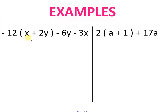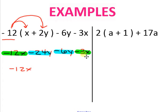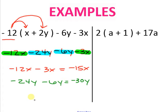Now find your parentheses — here they are — and the term outside. It's a negative number, so be careful. Negative 12 times x is negative 12x, and negative 12 times 2y is negative 24y. Bring down the rest: minus 6y minus 3x. Combining like terms: negative 12x minus 3x is negative 15x, and negative 24y minus 6y is negative 30y. In alphabetical order, the final answer is negative 15x minus 30y.